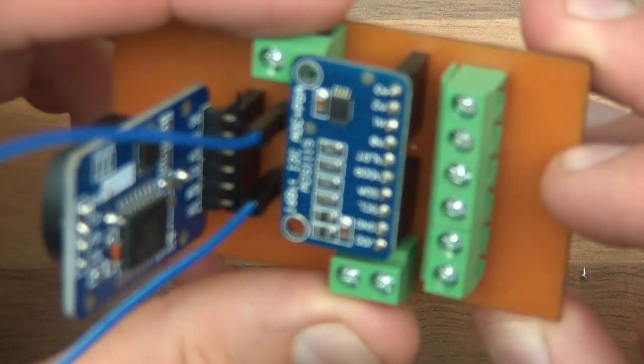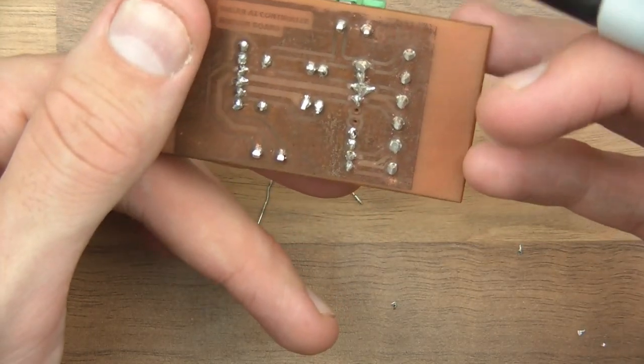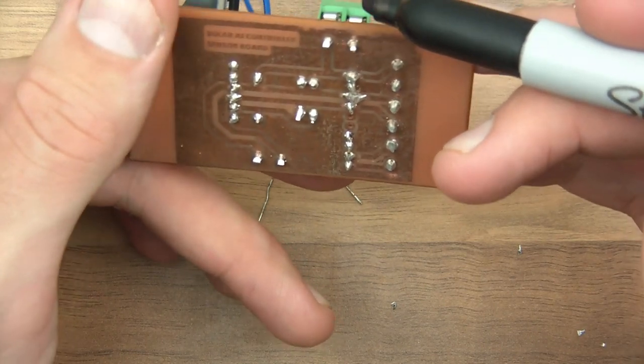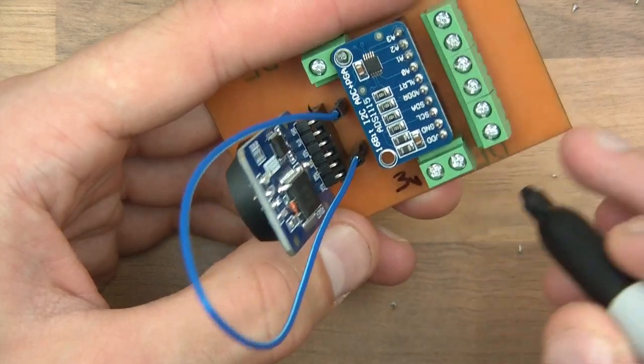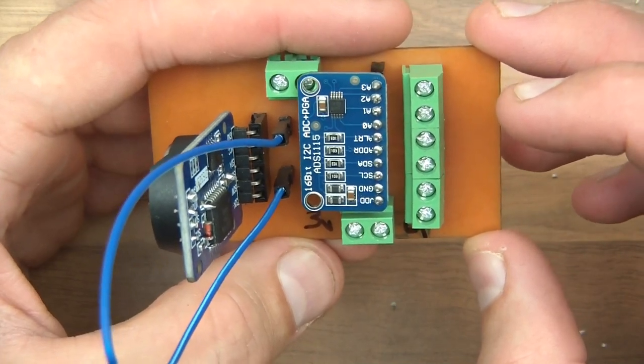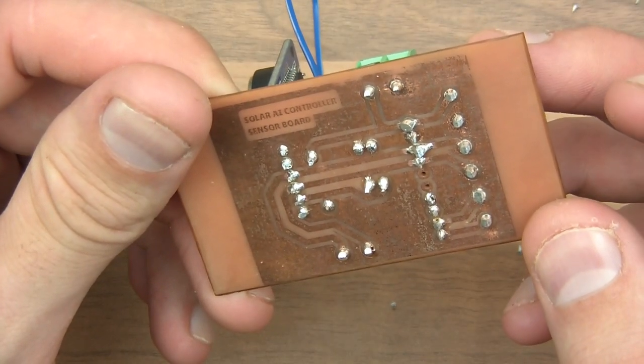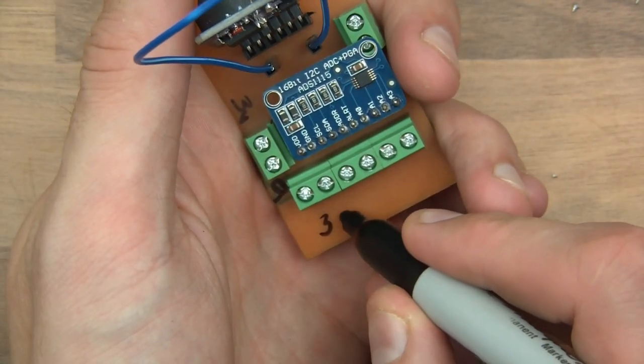The last thing I have to do with this board is to mark out the pins. This one here will be 3.3 volts and this one's ground. Then here we've got 3 volts and ground.